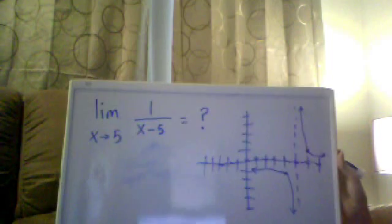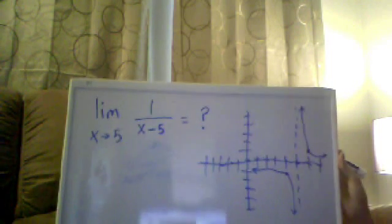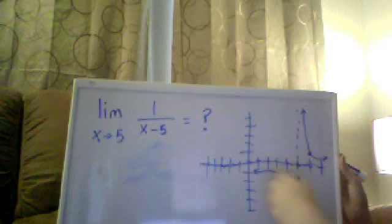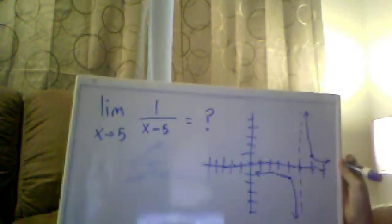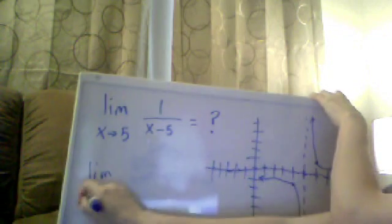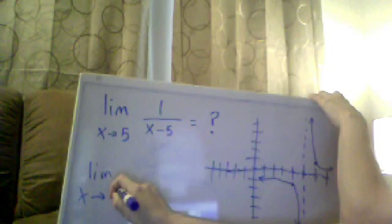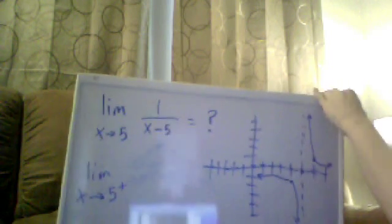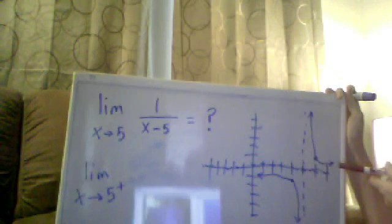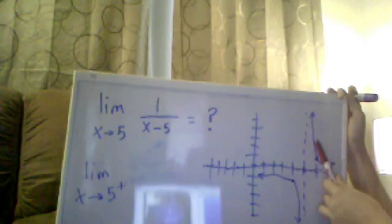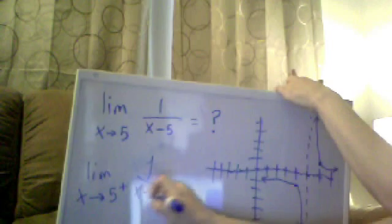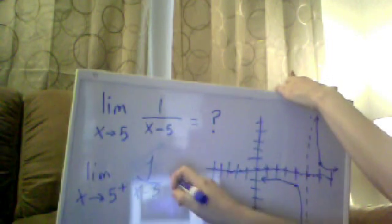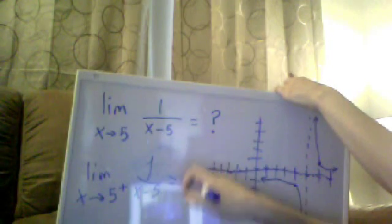As I get closer and closer to five, if I approach it from one direction I get something different than if I approach it from the other direction. So we use this new notation where we talk about which direction we're looking at the limit. Let's do the limit as X approaches five from the positive direction. From the positive direction means from the right, and as I get closer and closer to five, I'm approaching positive infinity. So the limit as X approaches five from the positive direction of one over X minus five equals positive infinity.